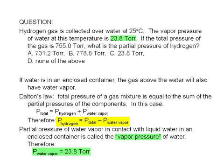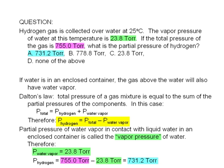The total pressure is given as 755 Torr. Therefore, the partial pressure of hydrogen is 755 Torr minus 23.8 Torr, or 731.2 Torr. The correct answer is A.